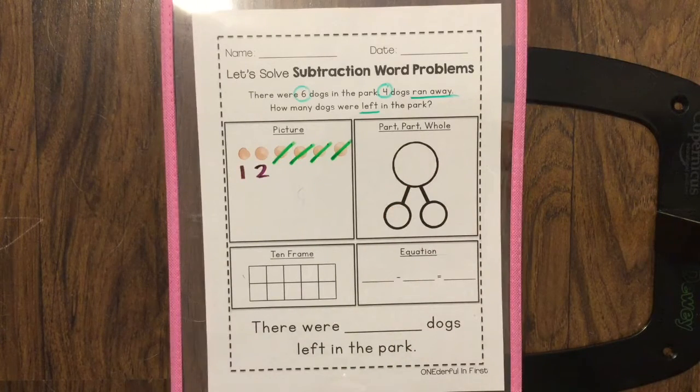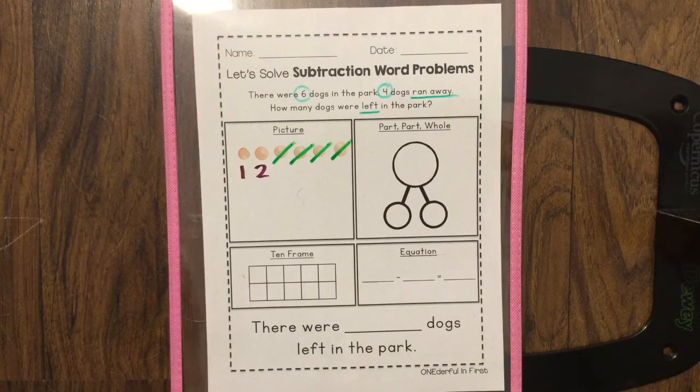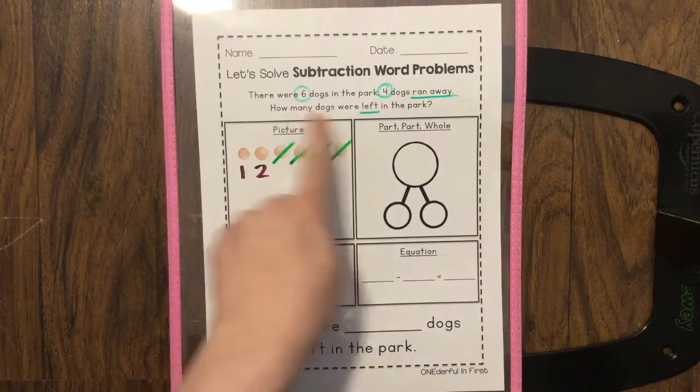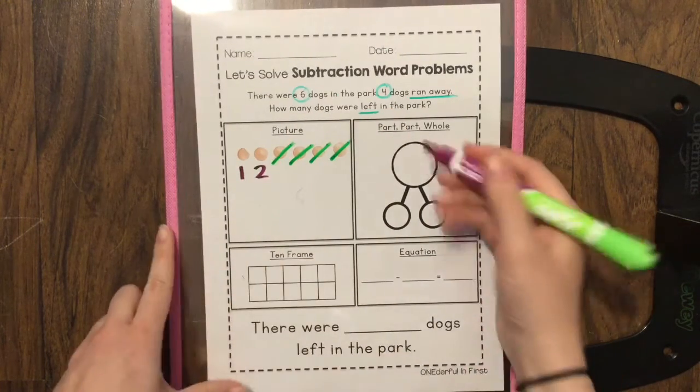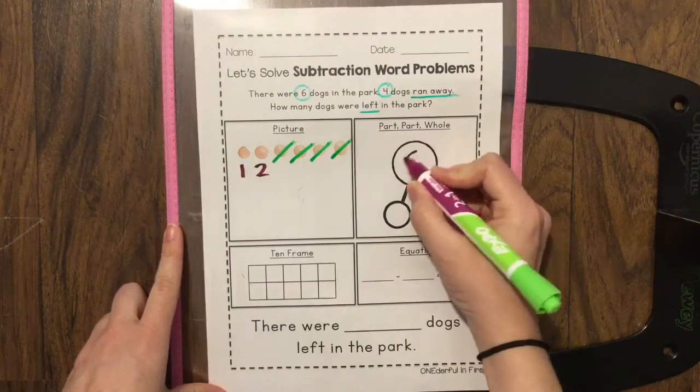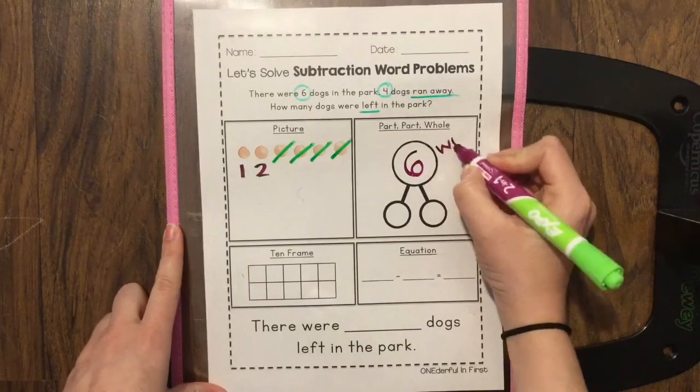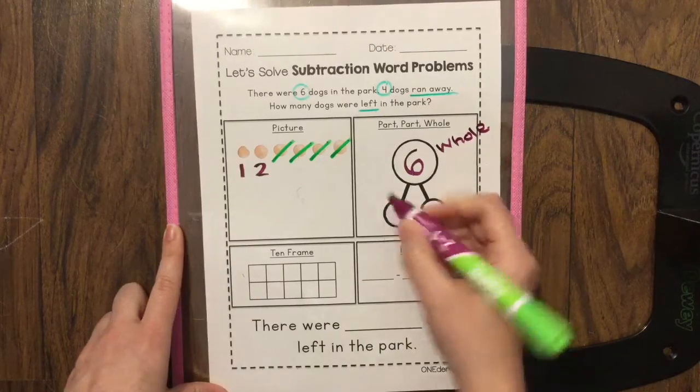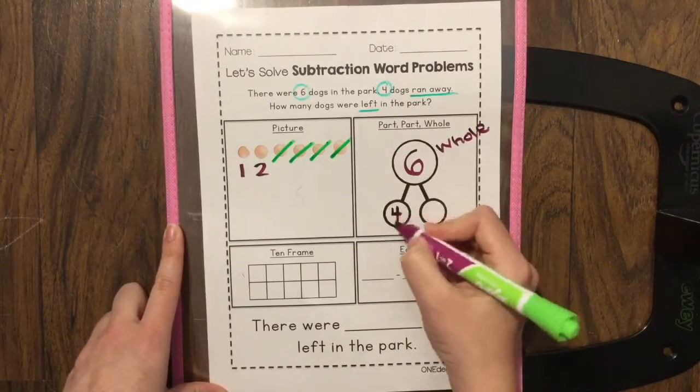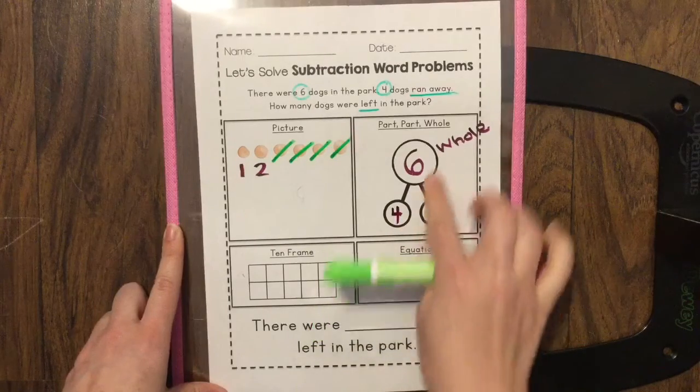Let's fill in our number bond. What's the biggest number we have so far? Six, four, or two? Six is the biggest number that we have so far. So six is our whole number. Our whole number is six. We also have four and two. Four and two make six.